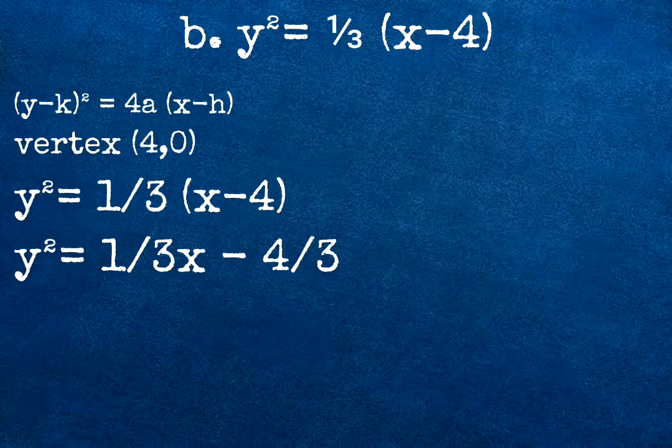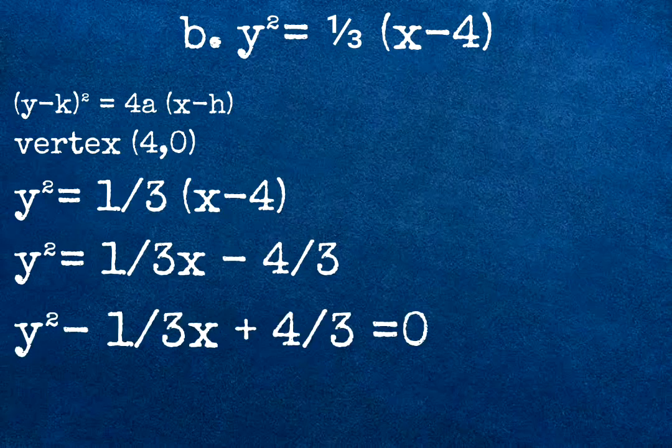Then we are going to move 1 over 3x minus 4 over 3 to the side of y squared. And the answer will be y squared minus 1 over 3x plus 4 over 3 equals 0.